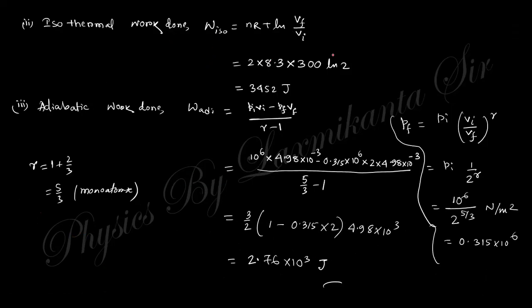For the isothermal process, work done W = nRT·ln(V_f/V_i) = nRT·ln(2). Substituting n = 2, R = 8.314, T = 300 K gives the isothermal work done. For the adiabatic process, W = (P_i·V_i - P_f·V_f)/(γ - 1). The final pressure P_f = P_i·(V_i/V_f)^γ = P_i·(1/2)^(5/3), since γ = 5/3 for monatomic gas.